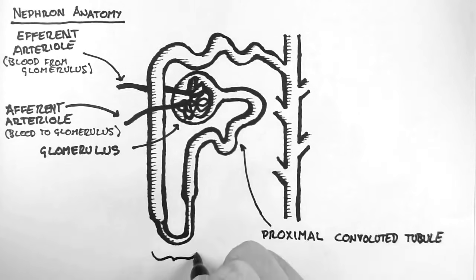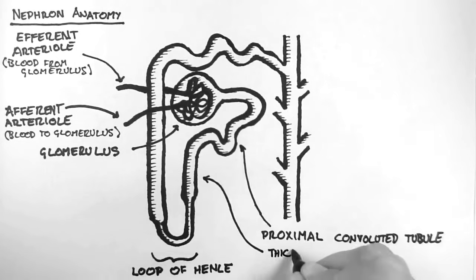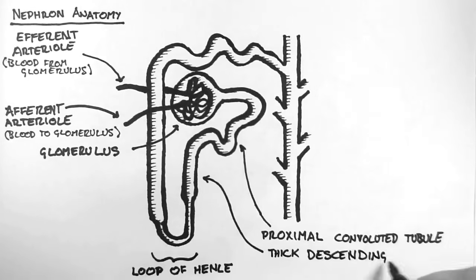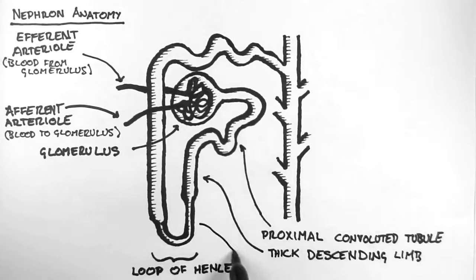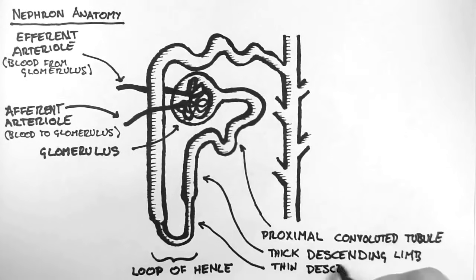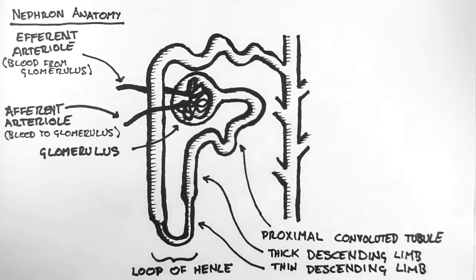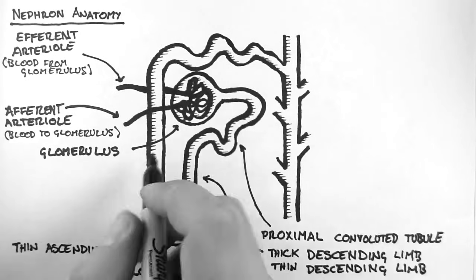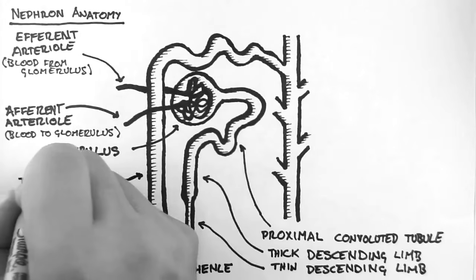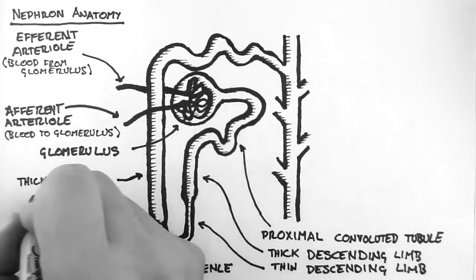This big loop here is called the loop of Henle. This is the part that dips into the medulla. Now there are four limbs of the loop of Henle: the thick descending limb, the thin descending limb, the thin ascending limb, and the thick ascending limb.